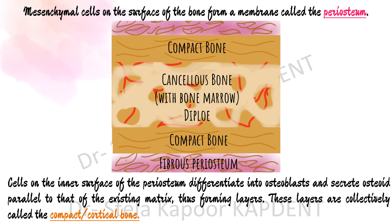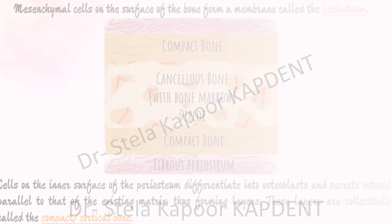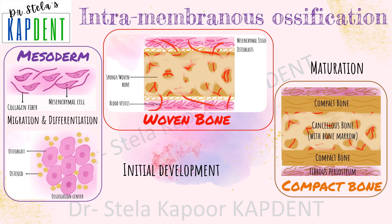In the later stages, the mesenchymal cells on the surface of the bone form a membrane called the periosteum. The cells on the inner surface of the periosteum differentiate into osteoblasts and again secrete osteoid parallel to the existing matrix, forming layers called compact or cortical bone. The final structure is bound on both sides by compact bone and a fibrous periosteum, while on the inside there is spongy bone with bone marrow, also called the diploë.